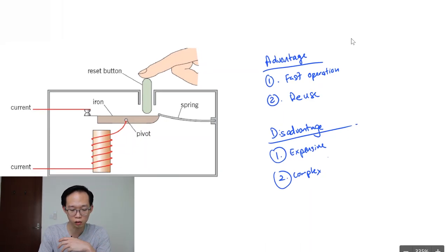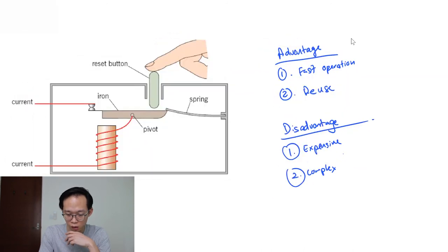So the advantages for a circuit breaker are that number one, it is a very fast operation. Now a fuse takes time to heat up and blow, whereas for a circuit breaker, the magnetic attraction happens instantaneously, almost instantaneously. And so it cuts the current much faster than a fuse. So that's the first advantage.